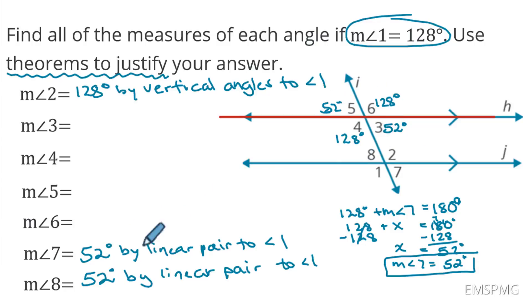So again, angle 8, I already wrote all my answers over here. Angle 8 was 52 degrees. Angle 7 was 52 degrees. Angle 1 was 128. That was given to us. And angle 2 was 128 by vertical angle. So now I need a reason. So I've got all the answers. I did everything I needed to do. I need to know why now.